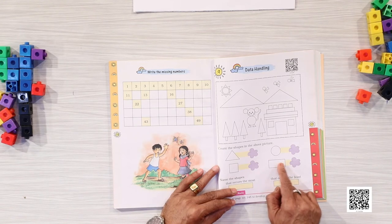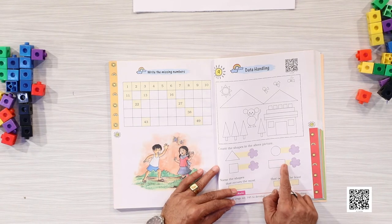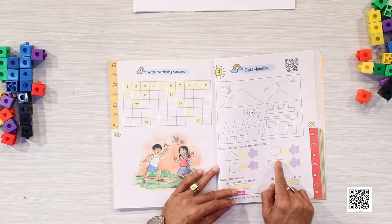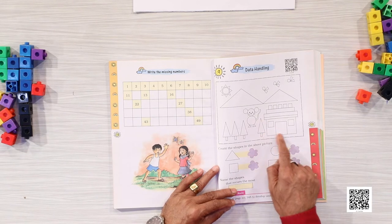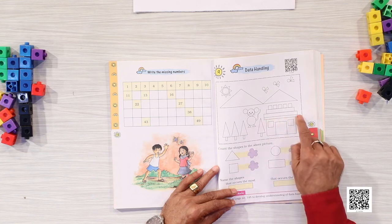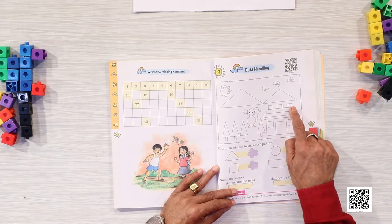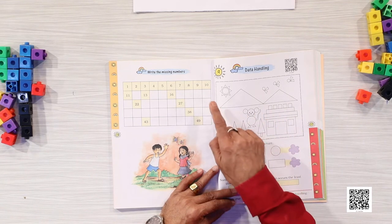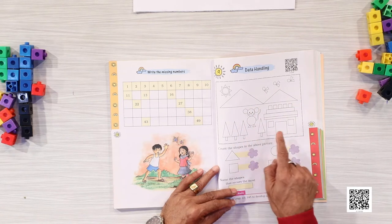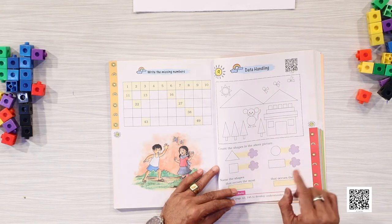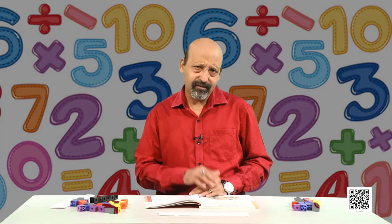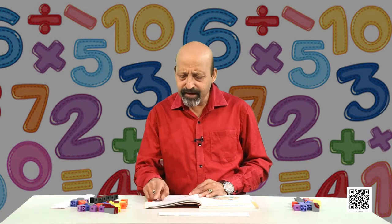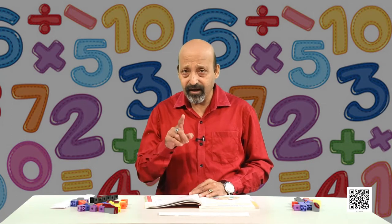Let us see how many shapes there are in which these two sides are not equal. So it is 1, then this bigger one 2, then 3, 4, 5 — and is there any other shape like this? No. So these are 5. I may be wrong — you please count once again and write.